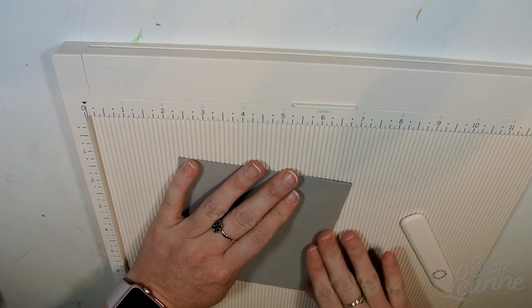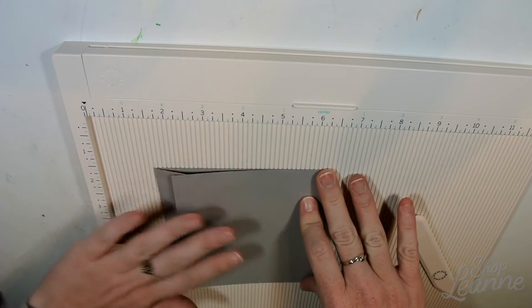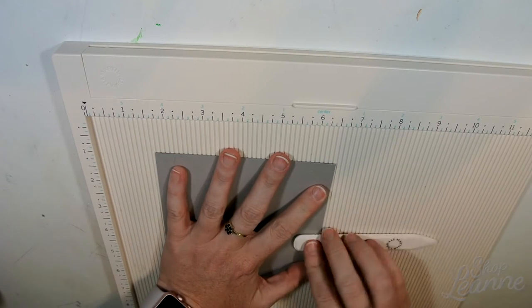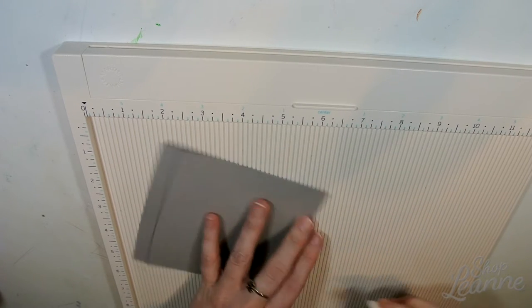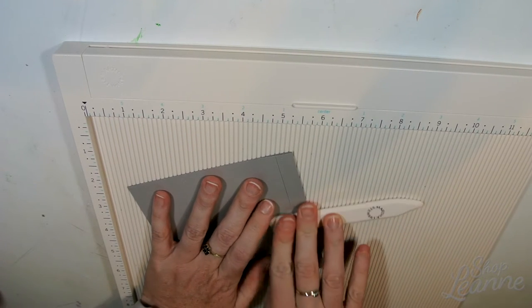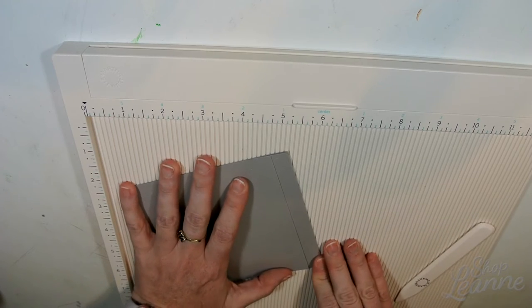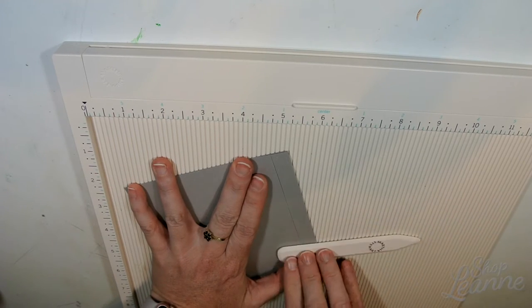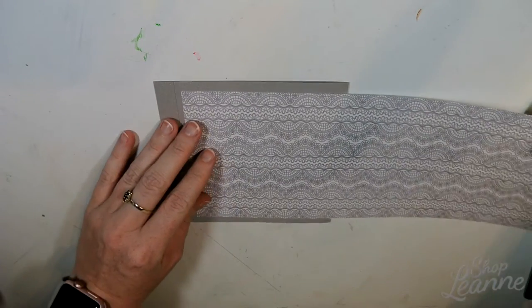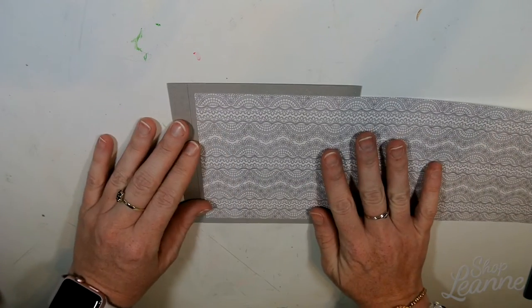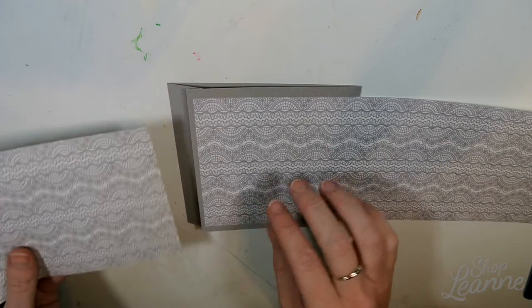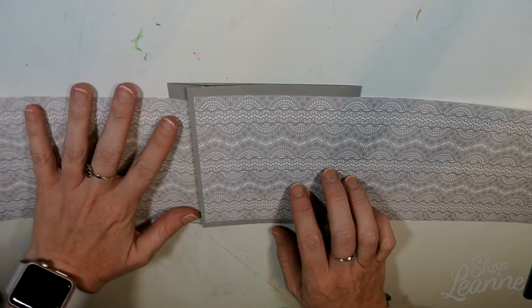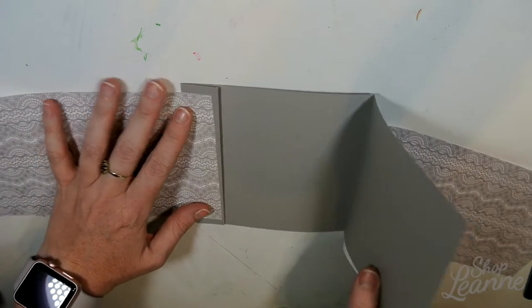When I'm creasing down the edges, I lay my bone folder flat. If I was to use the edge of the bone folder, it would make the crease shiny on the paper because this paper is really thick and coated. So it's best if you lay the bone folder flat and just score it over top.